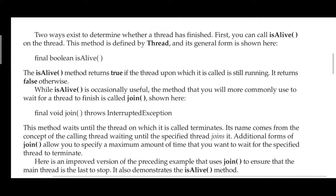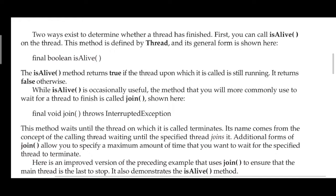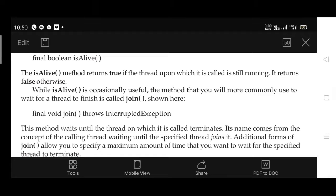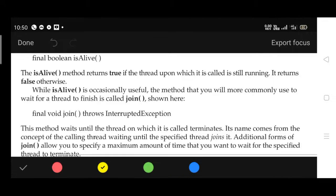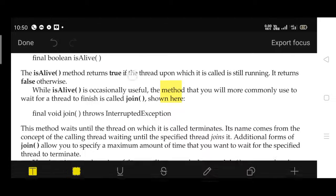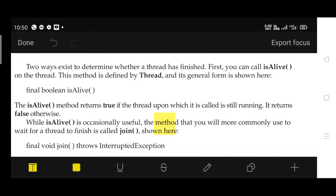Two ways exist to determine whether a thread has finished or not. First, you can call a method to identify whether the thread has completed its execution or not. One is making a call for the function isAlive().